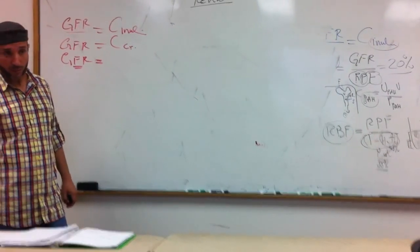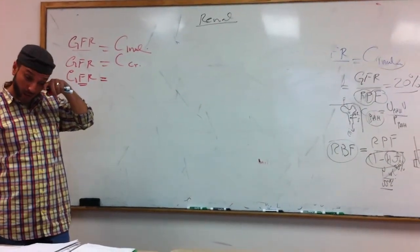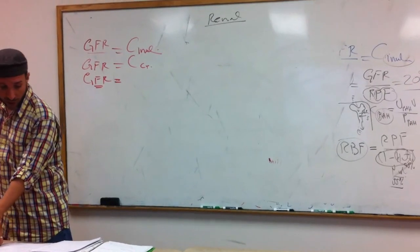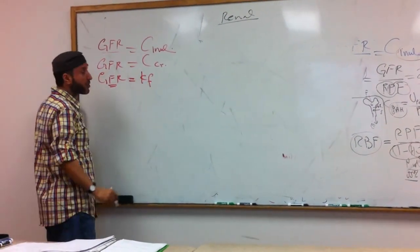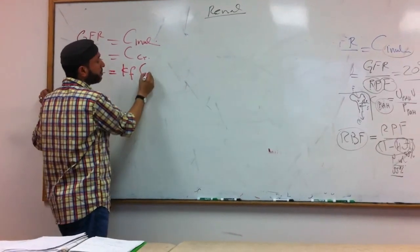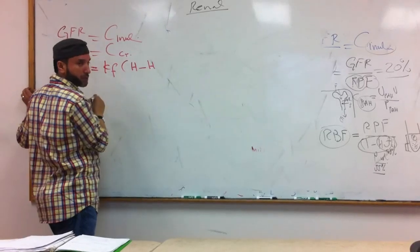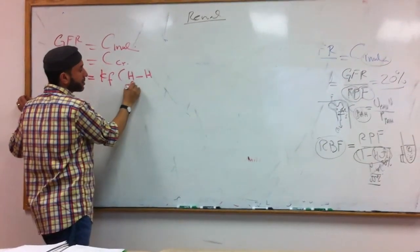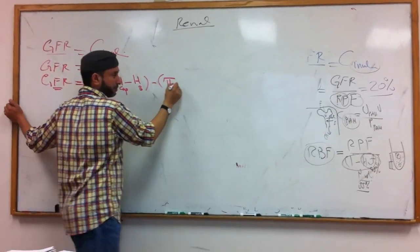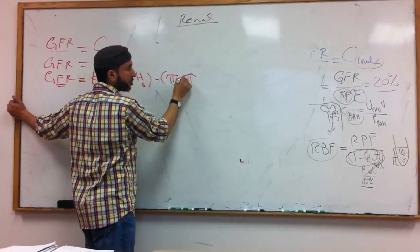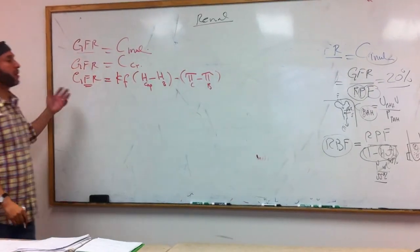We can use Starling forces. The equation uses KF, the filtration coefficient, times: hydrostatic pressure of the capillaries minus hydrostatic pressure of Bowman's, minus oncotic pressure of the capillaries, minus oncotic pressure of Bowman's. This is how to measure the GFR.